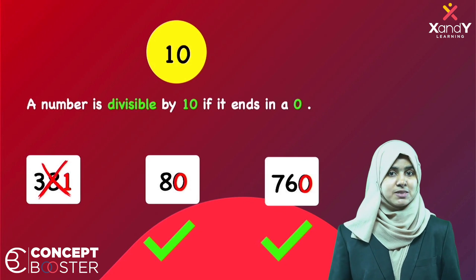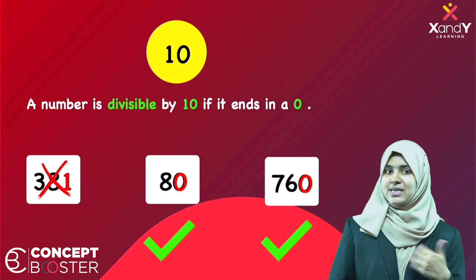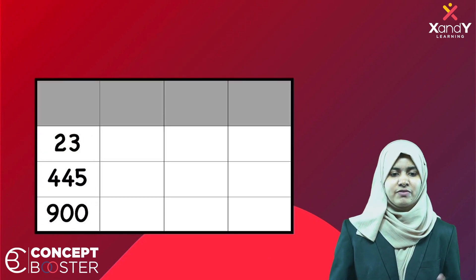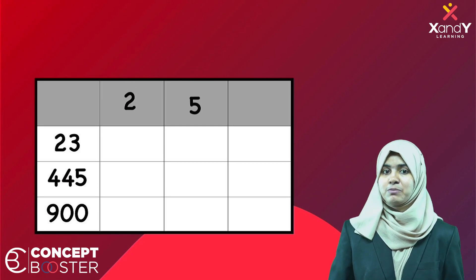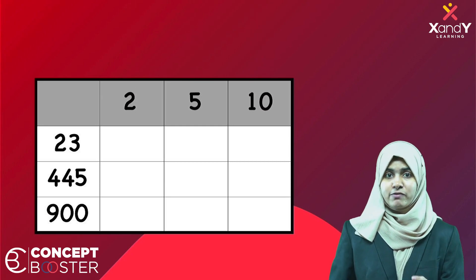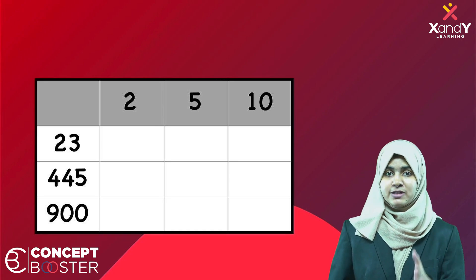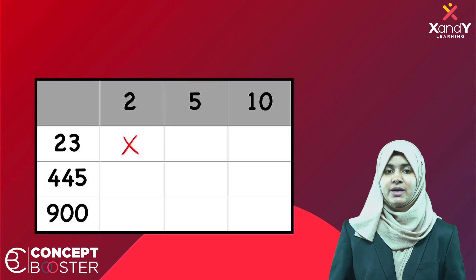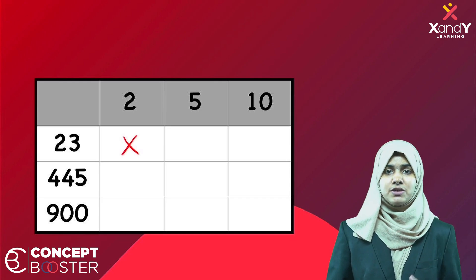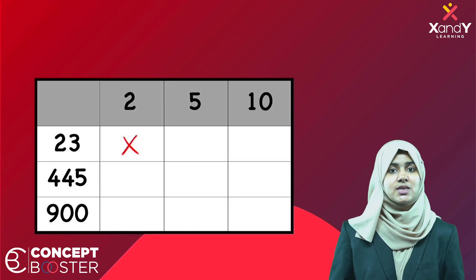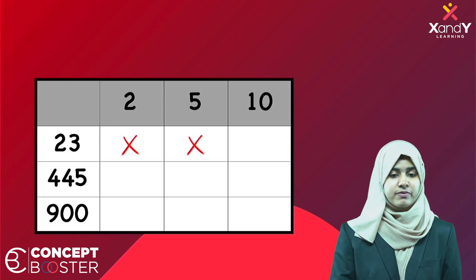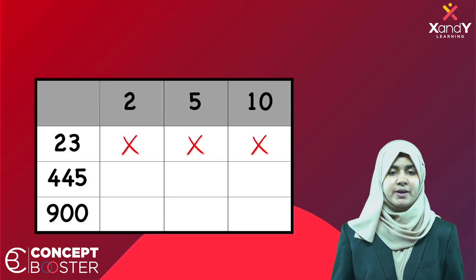Whereas 381 does not end with 0, so it is not divisible by 10. Now let's look at a few practice problems with the numbers 23, 445, and 900, and check divisibility by 2, 5, and 10. First, 23: it is not even, so it is not divisible by 2. It ends with 3, not 0 or 5, so it is not divisible by 5 or 10.